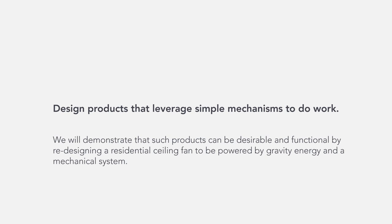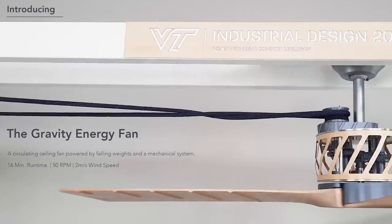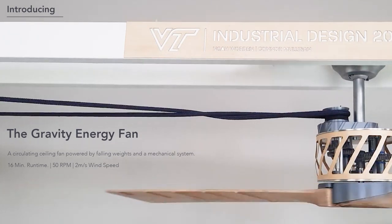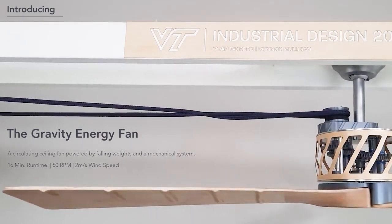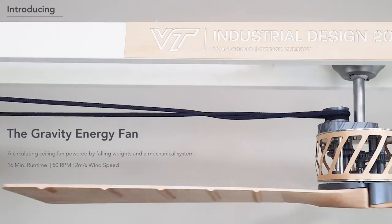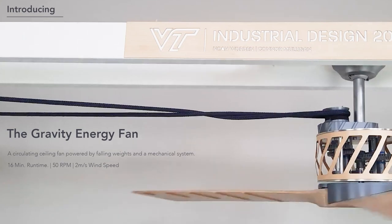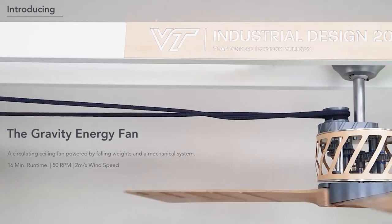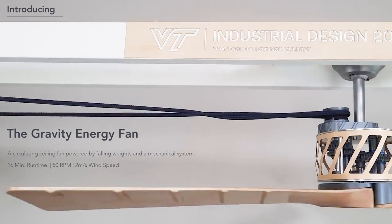Introducing the Gravity Energy Fan, a circulating ceiling fan powered by falling weights and a mechanical system. With standard eight-foot ceilings, the Gravity Energy Fan runs for 16 minutes per charge. It runs at 50 rotations per minute with a wind speed of about 2 meters per second.